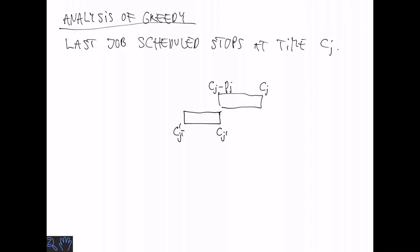stopped at cj prime and started at cj prime minus its processing time. And in general there could be a sequence of jobs where each one was waiting for the former one to continue.